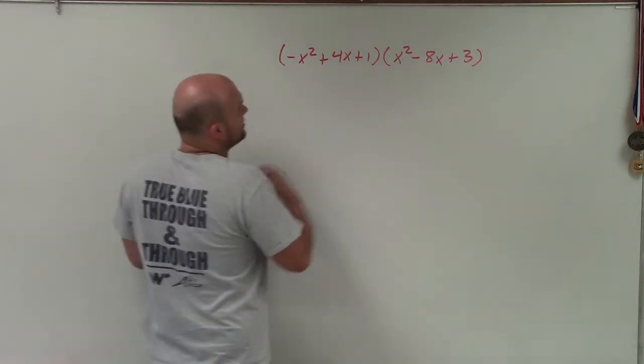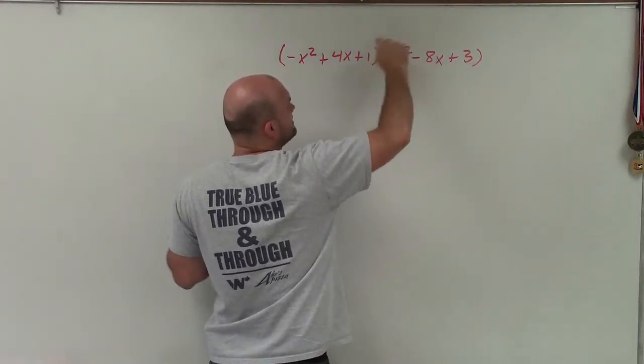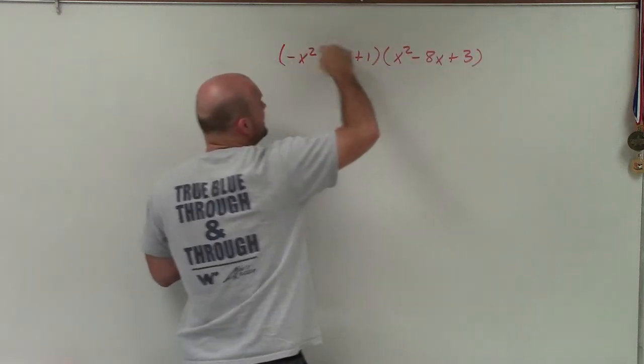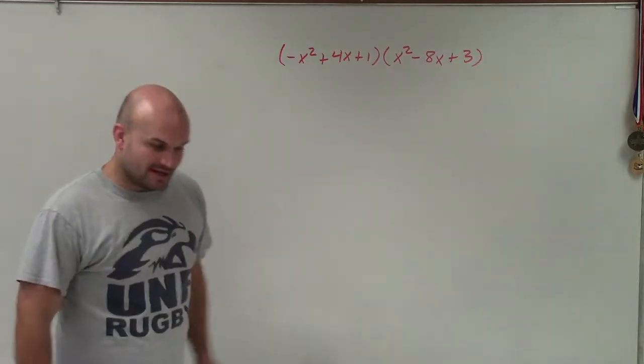Now, one thing, we can always look at this as distributive property. I need to multiply the 1 times every single one of these terms, the 4x times every single one of these terms, and the negative x squared times every one of those terms. Or you could do it the other way as well.